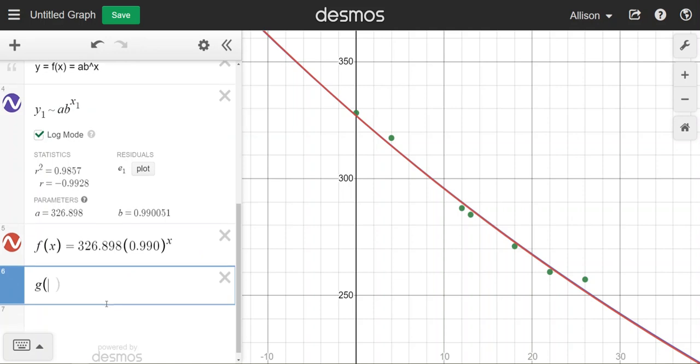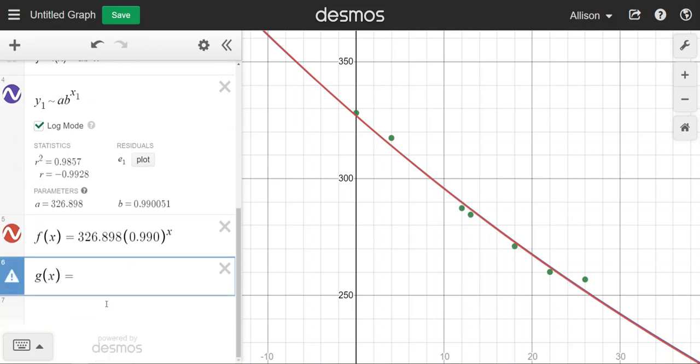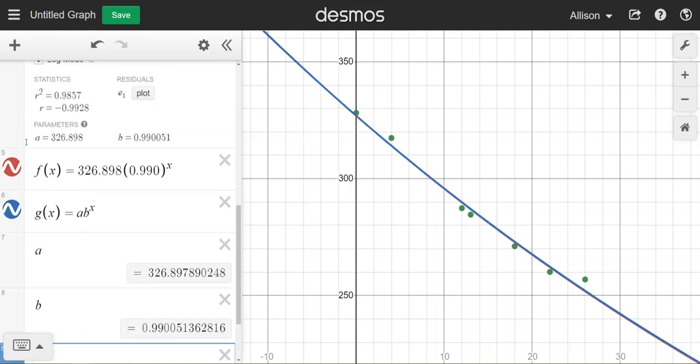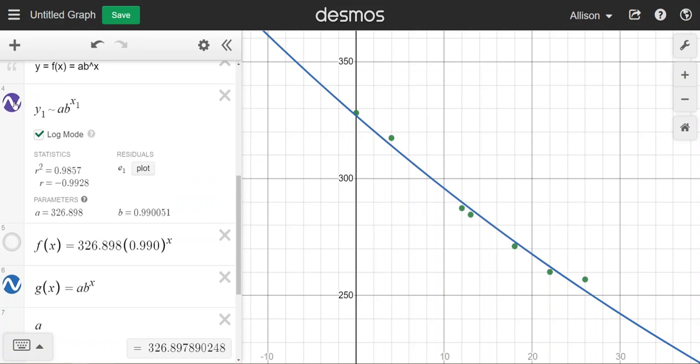If I need a little more accuracy I could do a g of x function where in place of a I type a and in place of b I type b because the letters a and b have at the end of the regression statement been imbued with those values so a has more decimal places for the parameter a, b now has more decimal places for the parameter b and so I can see that the blue line is going to match exactly with the purple one from the regression statement.